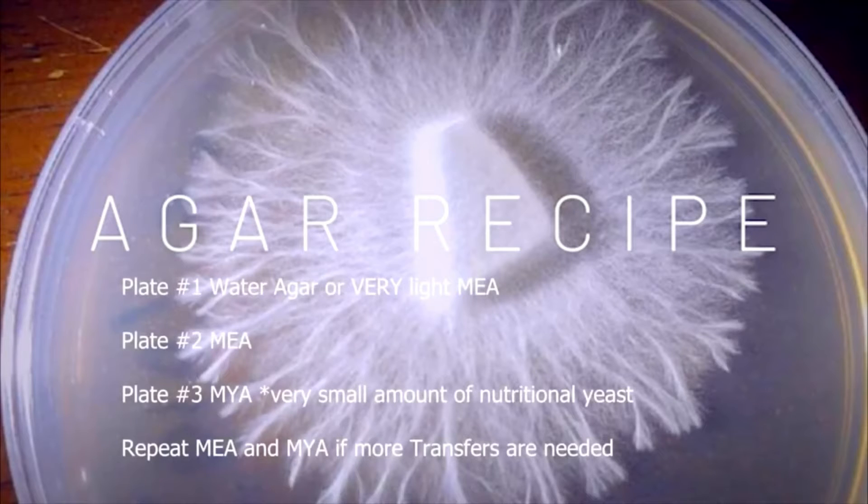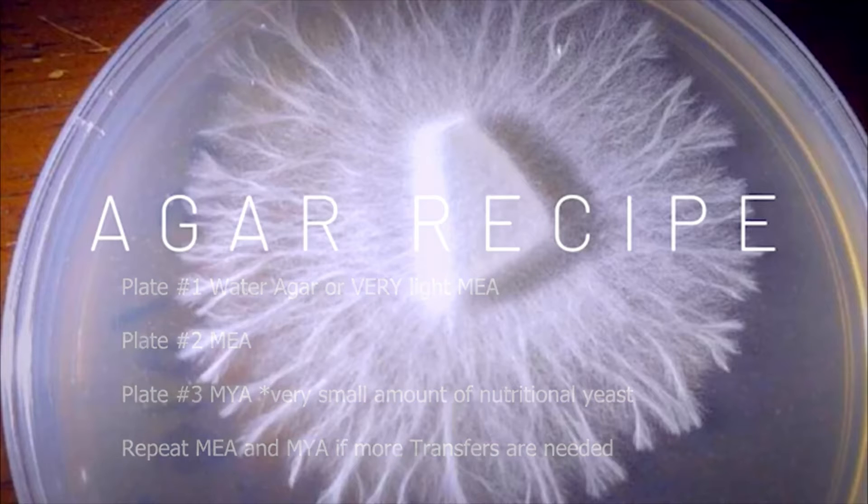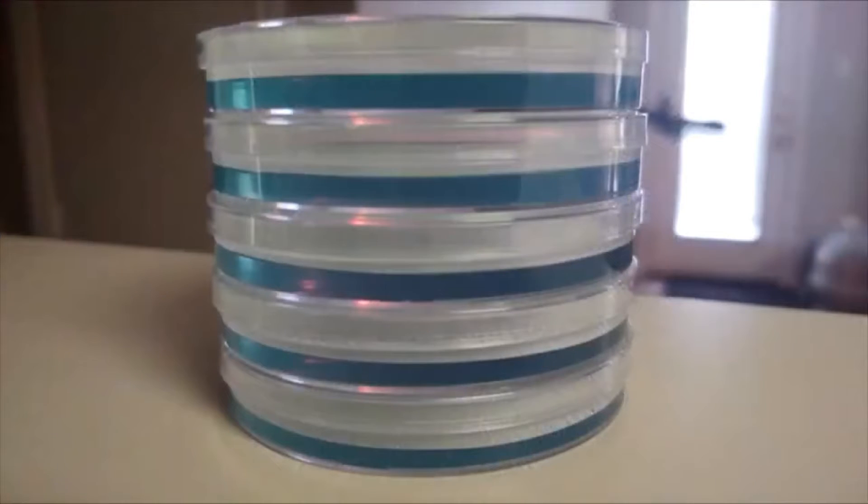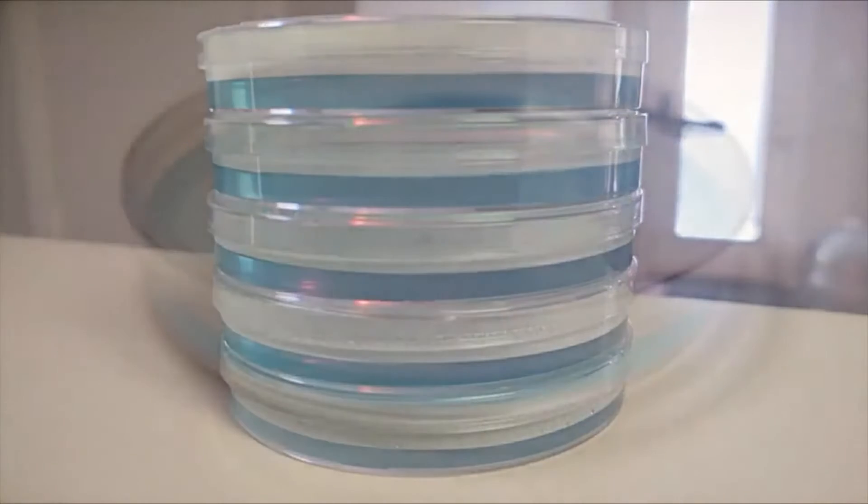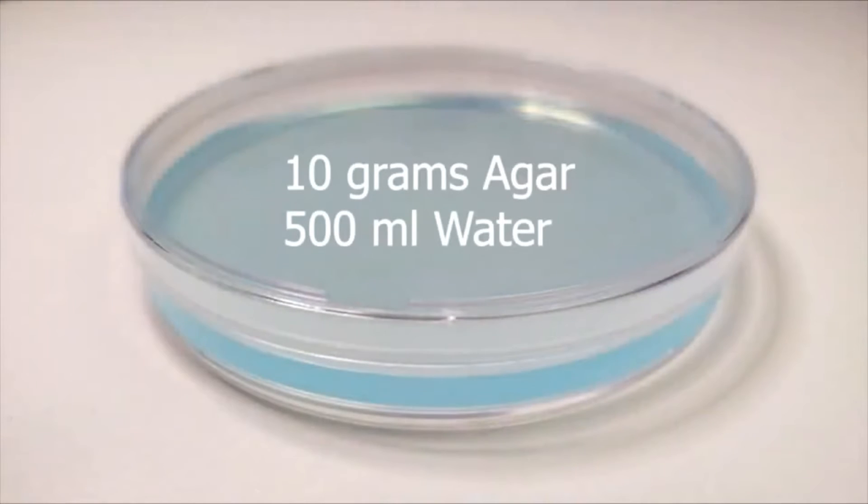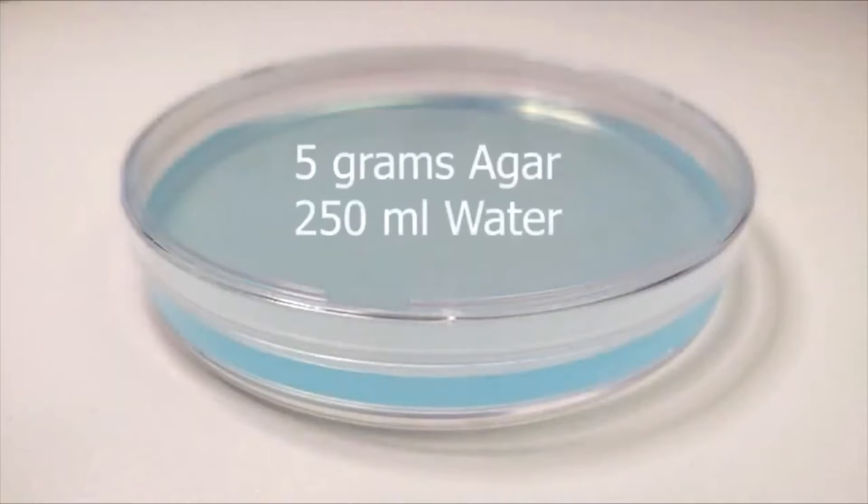As you research, you find that rhizomorphic and tomentose will both produce beautiful mushrooms, but it's easier to determine the most viable points to make successful transfers due to the antlering and rhizomorphic growth. Our water agar recipe is simply 10 grams of agar to 500 milliliters of purified boiling water.